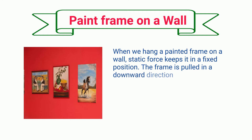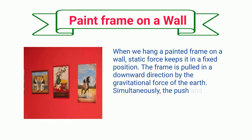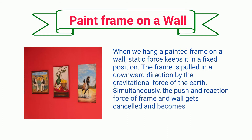When we hang a painted frame on a wall, static force keeps it in a fixed position. The frame is pulled in a downward direction by the gravitational force of the earth. Simultaneously, the push and reaction force of the frame and wall get canceled and become balanced, keeping it stationary.